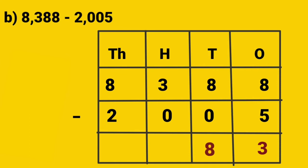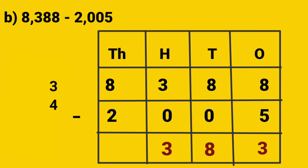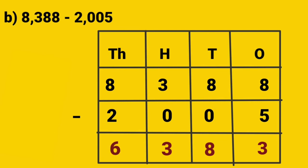And the third one is the 100's place: 3 minus 0, so 3 minus 0 is equal to 3. See the 1000's place: 8 minus 2. We can subtract 2 from 8, so we get the answer 6. 8,388 minus 2,005 is equal to 6,383.